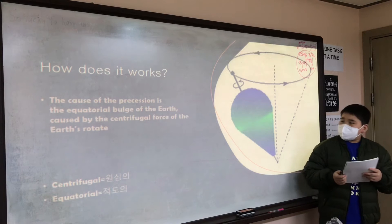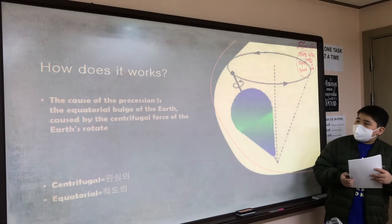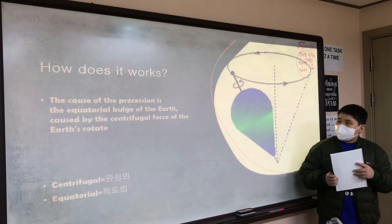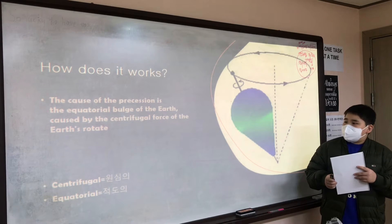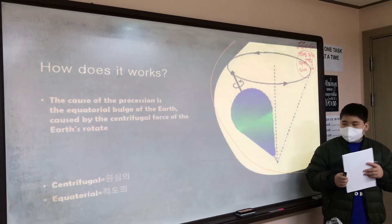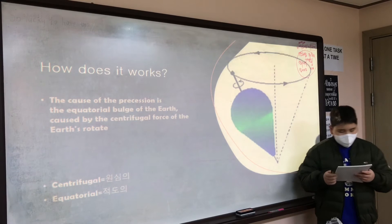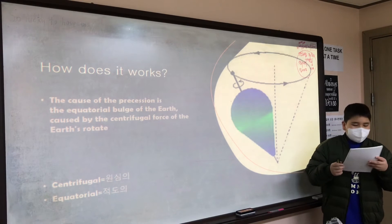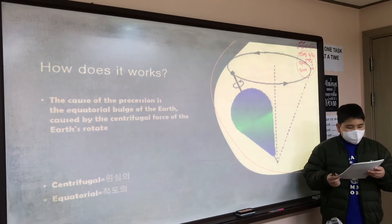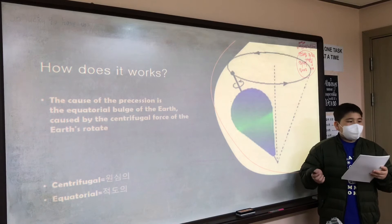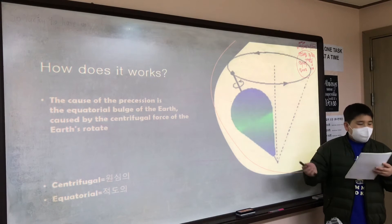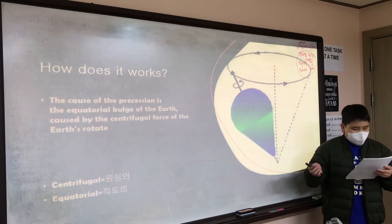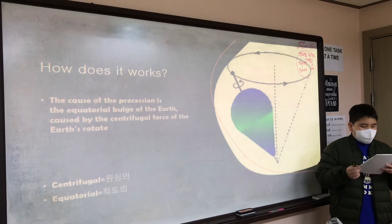How does it work? The cause of the precession is the equatorial bulge of the Earth, caused by the centrifugal force of the Earth's rotation. This rotation changes the Earth from a perfect sphere to a slightly flattened one, thicker across the equator.